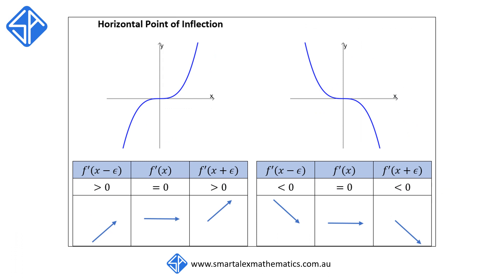At the horizontal point of inflection, the concavity of the curve changes but the direction of the gradient to the curve doesn't change. So it can either be continually increasing on both the left and right-hand side of the stationary point, in which f'(x) will be positive on both sides, or it can be continually decreasing on both sides, in which the value of f'(x) will be negative on both sides of the stationary point.